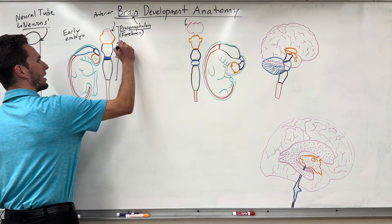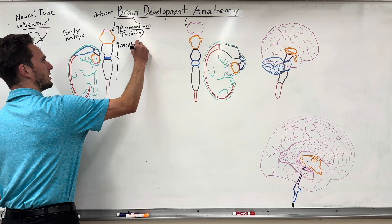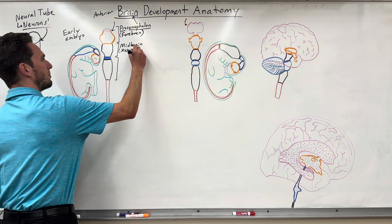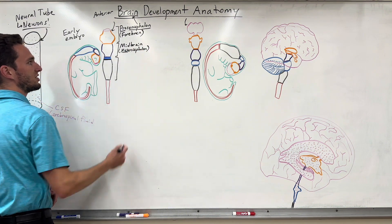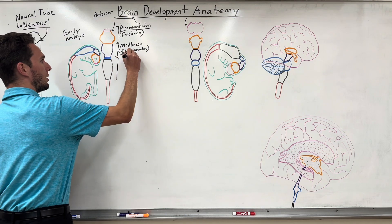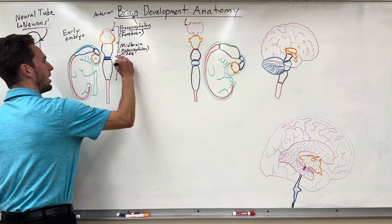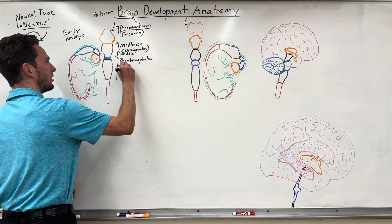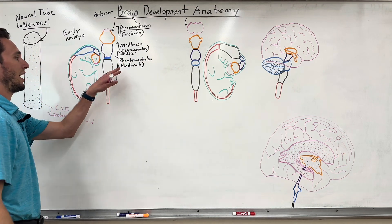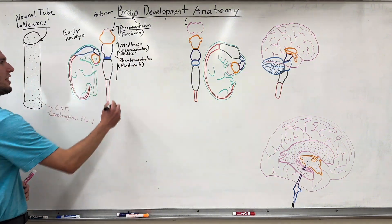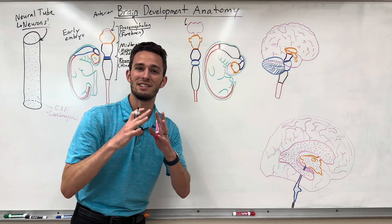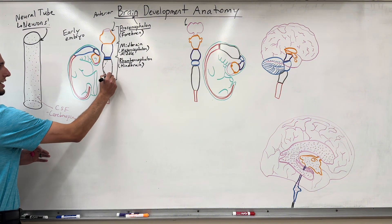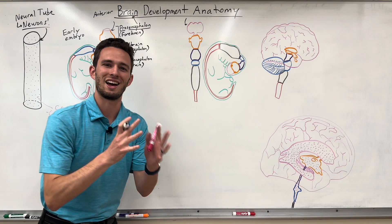The second part is called the midbrain, adequately named because it's in the middle of the other two brain structures. It's also called the mesencephalon — 'mes' means middle, so mesencephalon is in the middle. Lastly, we have the rhombencephalon, also called the hindbrain. 'Hind' means more posterior, and 'rhomb' refers to a rhombus — a diamond shape — because this structure kind of looked like a diamond. So they called it the rhombencephalon, or the diamond-shaped brain.